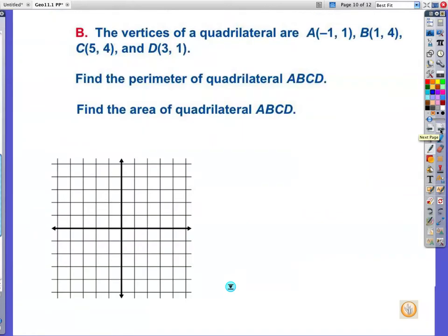The vertices of the quadrilateral are listed above here. Negative one, one. So, I'm going to put them on the graph paper here. Negative one, positive one. One, four. Five, four. Five, four. And three, one. Find the perimeter of the quadrilateral.